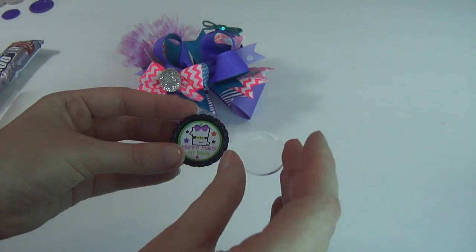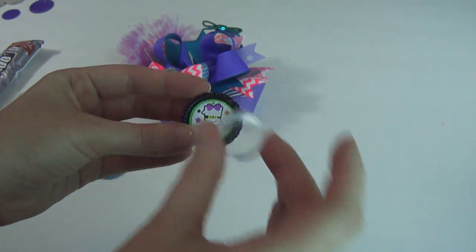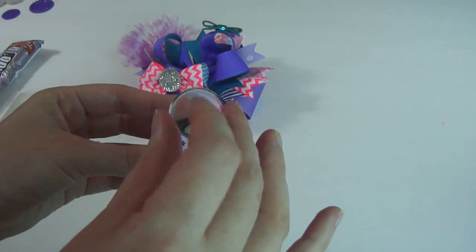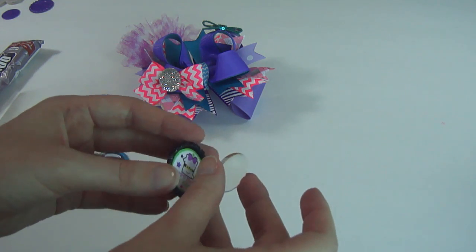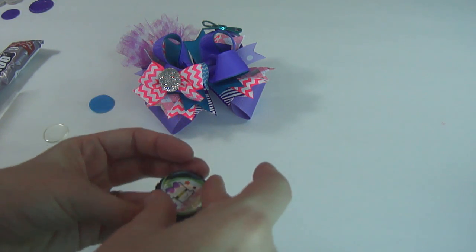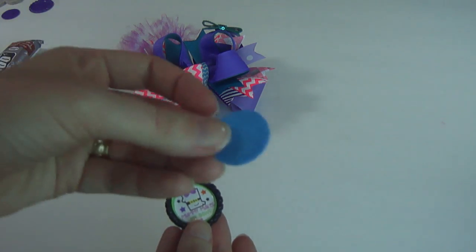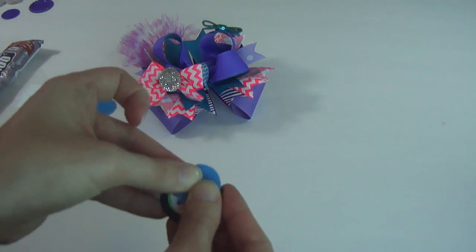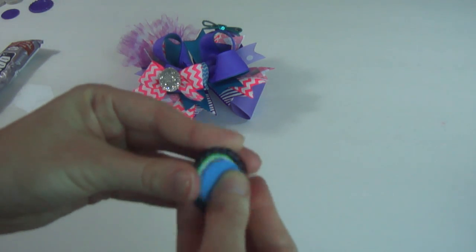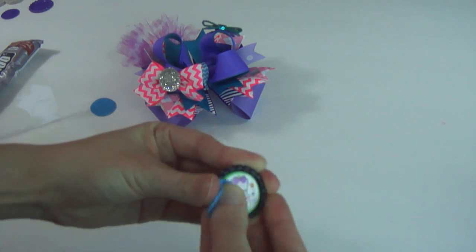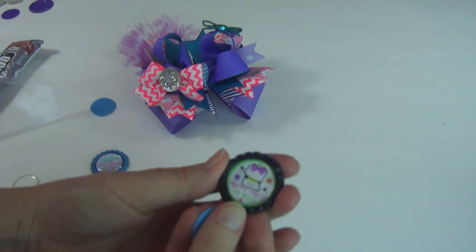Okay, now I'm going to take one of the clear epoxy circles. See, clear. And we're going to drop it right in the center. But be careful not to put your fingers on the top of this because it gets all fingerprints everywhere and you don't want that. All right, guys, and your bottle cap is now complete. That was so easy.